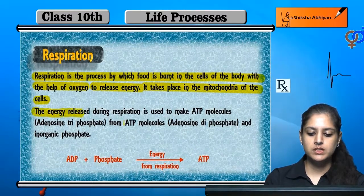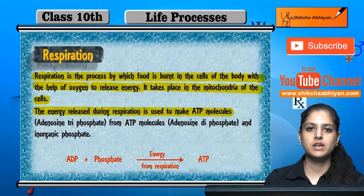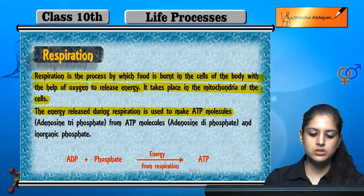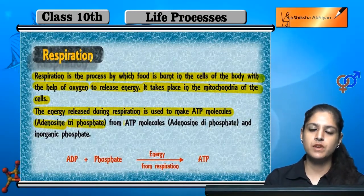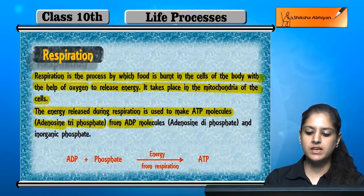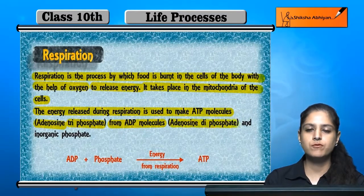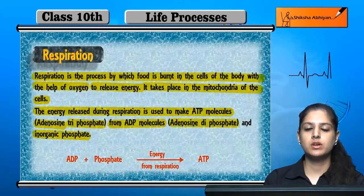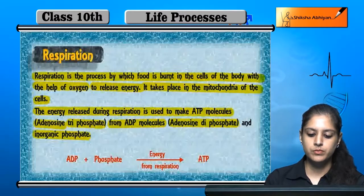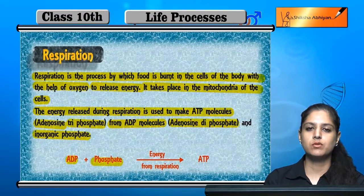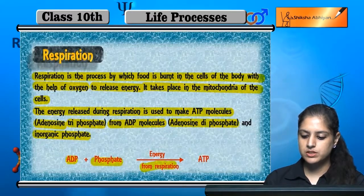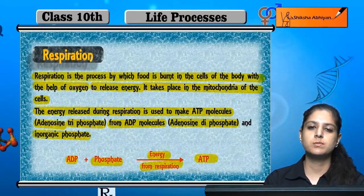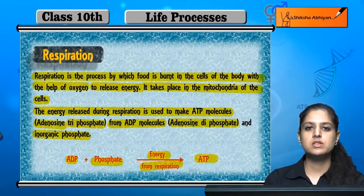The energy released during respiration is used to make ATP molecules. ATP stands for adenosine triphosphate, and ADP stands for adenosine diphosphate. ADP and inorganic phosphate react during respiration, and ultimately ATP is formed. ATP is adenosine triphosphate, in which energy is stored for future use. This is what respiration is.